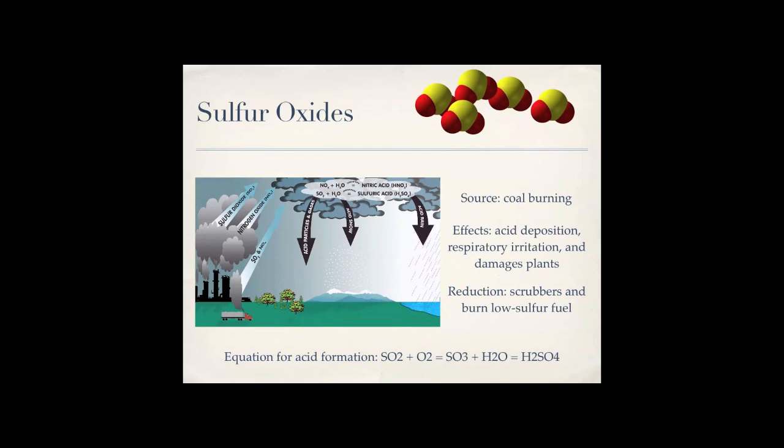Sulfur oxides — the source is coal burning. The effects are acid deposition, respiratory irritation, and damage to plants through acid deposition. To reduce sulfur oxides, you can use scrubbers or burn low sulfur fuel. The equation is shown on screen.